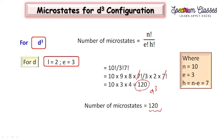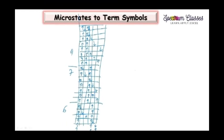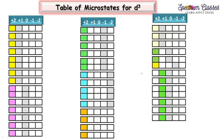Now the next important point is how to write these 120 microstates, because it is very difficult to learn this, and after learning it some mistakes or repetitions are also possible. So for writing these 120 microstates I am giving you a trick. I have drawn a few of the microstates in this slide and the other microstates are in the successive slides.